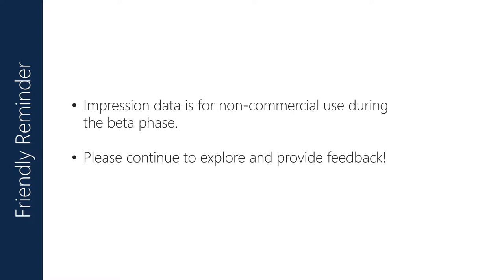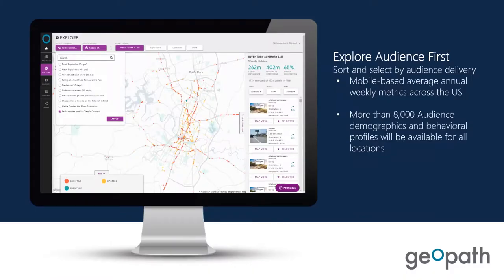Before we jump in, one key thing we always talk about is the audience-first approach — that's really the main line of how this was developed. We wanted our members to be able to talk about audiences and out-of-home in much more granular detail than ever before. A key part of that is the fact that there are more than 8,000 audience targets available in the new insight suite, from demographics to psychographics to behavioral characteristics.